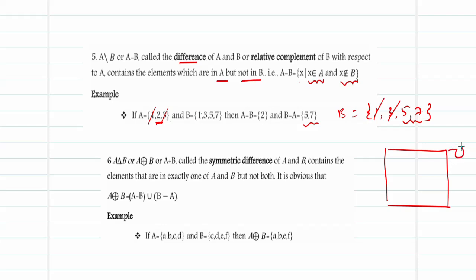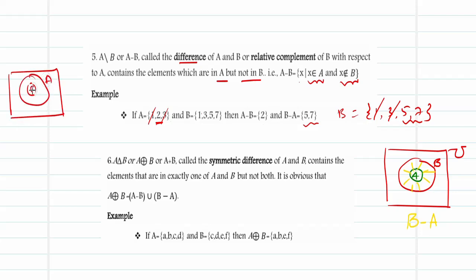Using the Venn diagram for the difference operator: for B − A, draw the universal set U with B as the larger set and A as a smaller set inside B. Removing A from B leaves the remaining portion — like a donut shape — which represents B − A. For A − B, the larger set is A and the smaller is B; removing B from A leaves the outer portion of A, representing A − B.